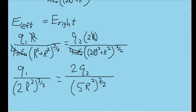And remember, we're looking for the ratio of q1 to q2. So let's divide both sides of this by q2 and multiply this 2r squared to the power of 3 halves on both sides as well.